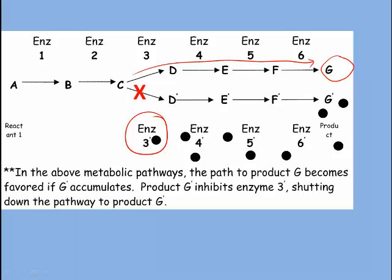If G prime becomes in demand again, then all of these little molecules of G prime would be used up, including the one that's inhibiting enzyme 3, and that pathway would open up again. So again, this is an example of a self-regulating mechanism.